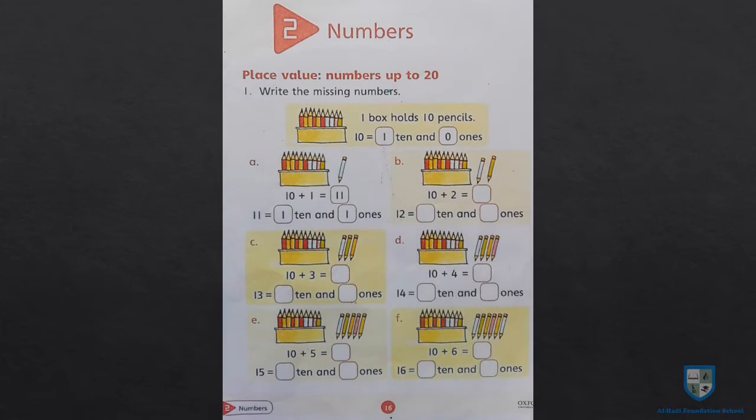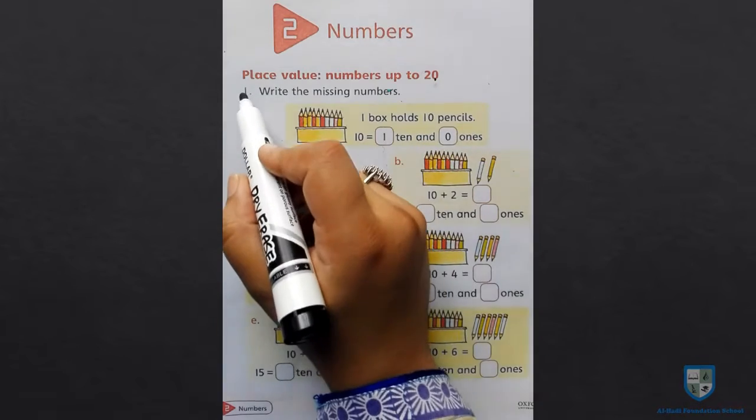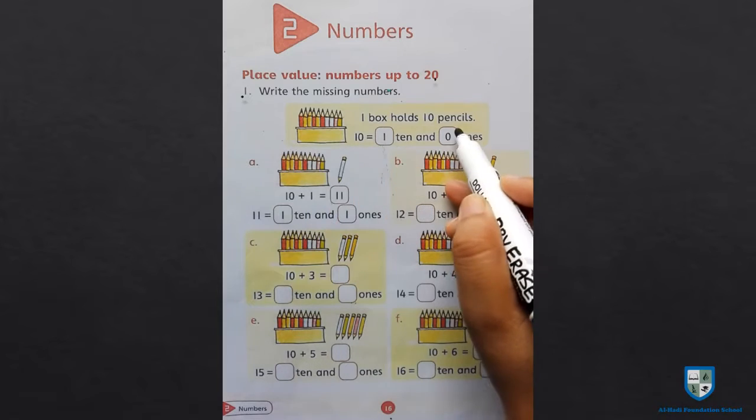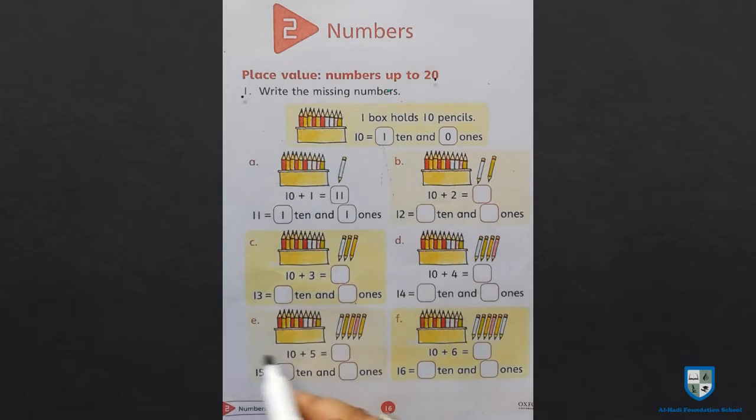Today we will learn 10s and 1s, place value numbers up to 20. Question number 1: Write the missing number. Now we have an example. Look at the example: A, B, C, D, E, and F.